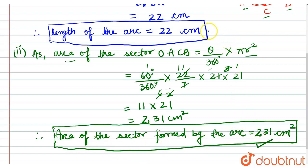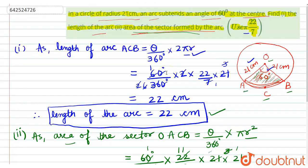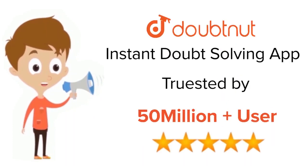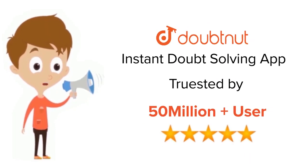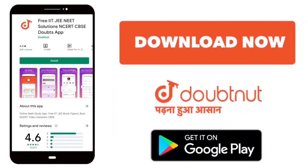So these two are the final answers to the question. For class 6 to 12, IIT JEE and NEET level, trusted by more than 5 crore students — download the DoubtNet app today.